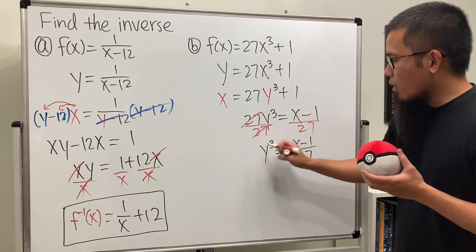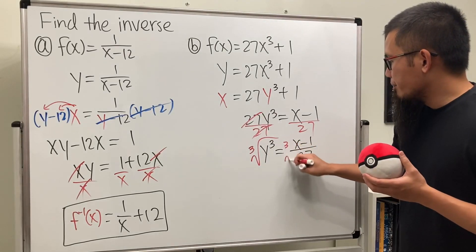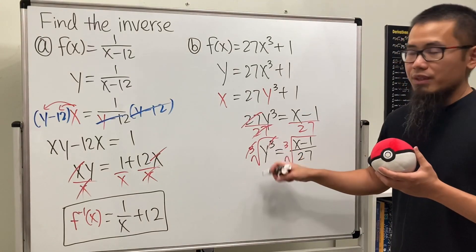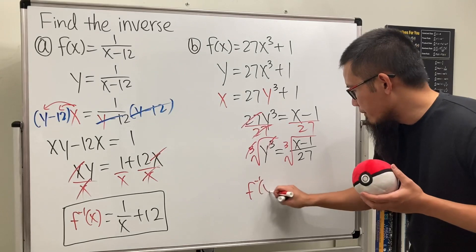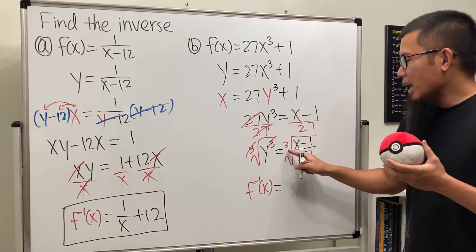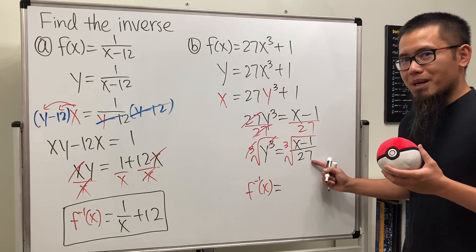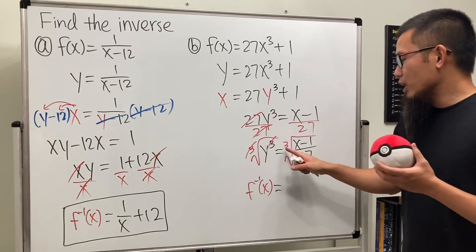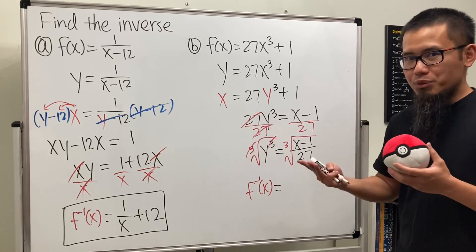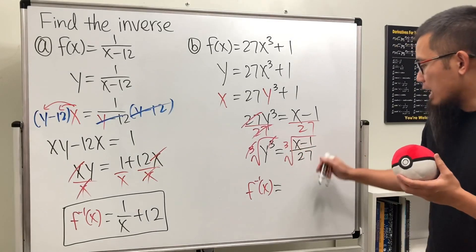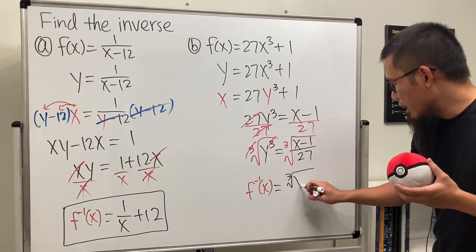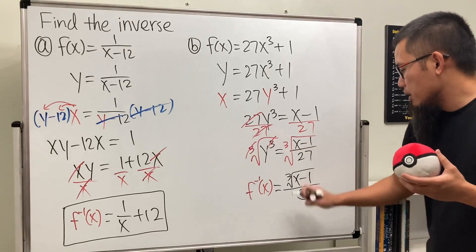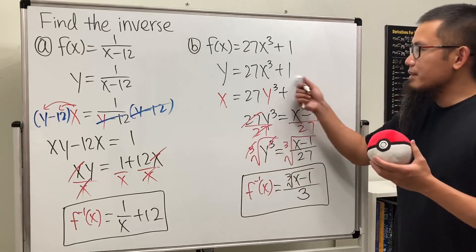We still have to solve for y, so take the cube root on both sides. The cube root and the cube cancel, which is very nice, and we get y by itself — that gives us the inverse. We have the cube root of the top and the cube root of the bottom. The cube root of 27 is just 3, so the inverse is the cube root of x minus 1, all over 3.